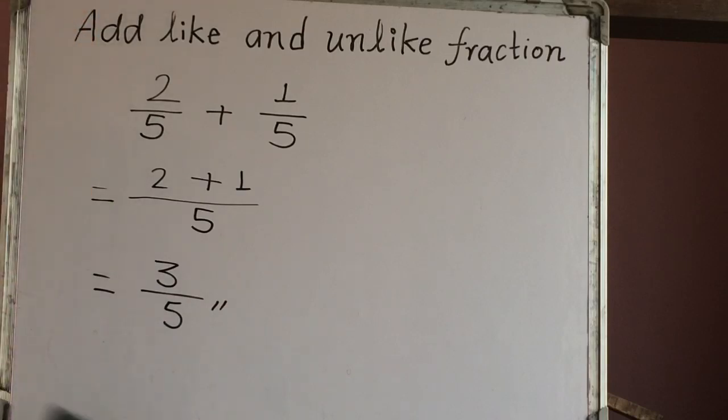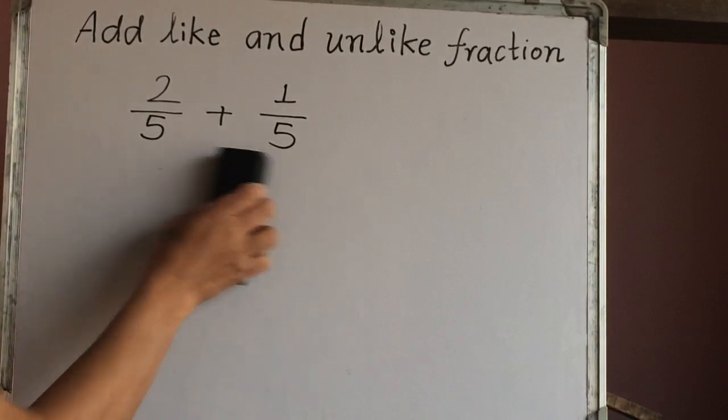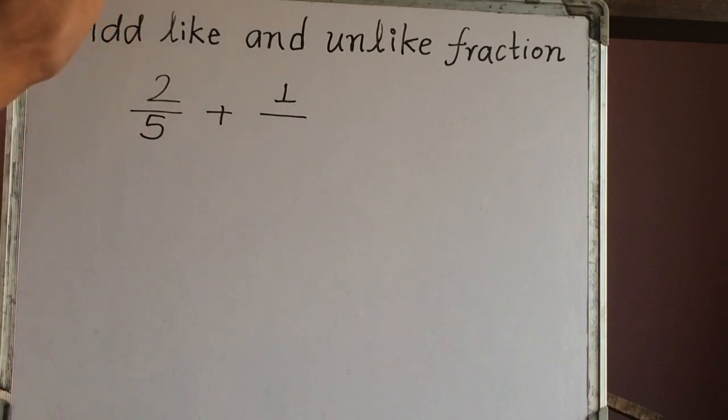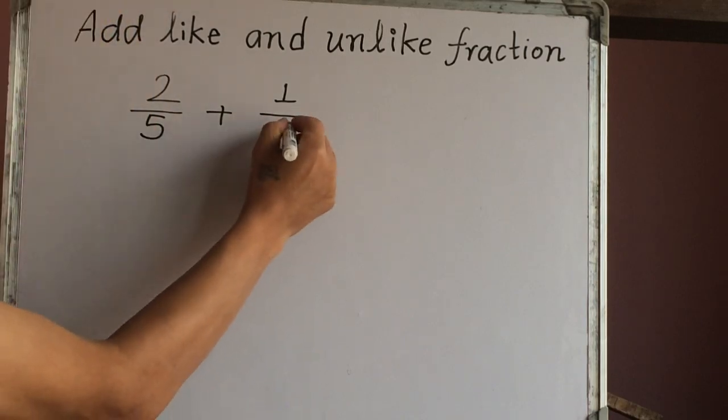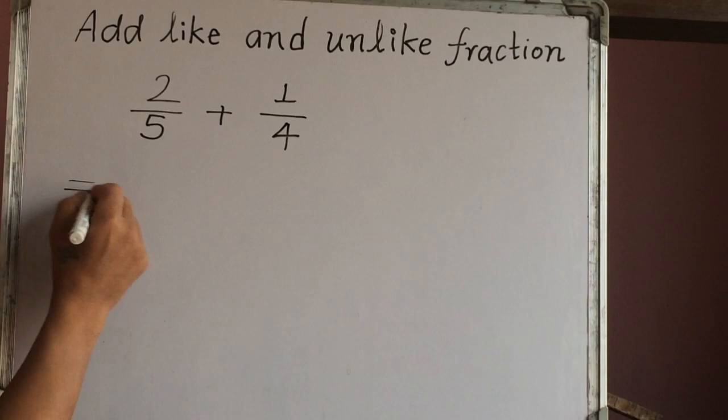Let's see unlike fraction. This is unlike fraction because we have different denominators here. So how can we add this? At first we have to make this like fraction. Convert this unlike fraction into like fraction. So here we have the process.